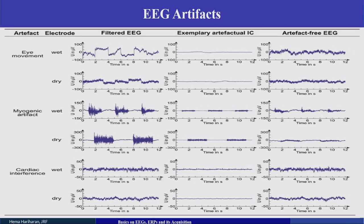For eye blinks, eye movement, muscular activity such as teeth clenching, and ECG activity — all can be detected and removed. We can also place HEOG and VEOG electrodes around the eyes to detect eye blinks and eye movements, and then remove those EEG artifacts accordingly.